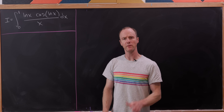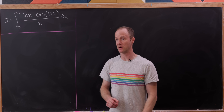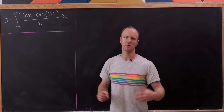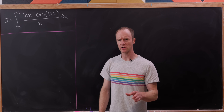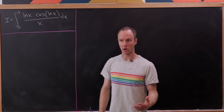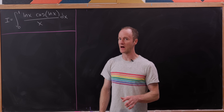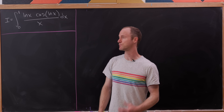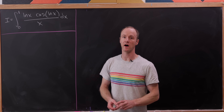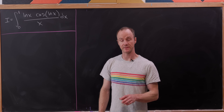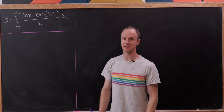Today we're going to look at an integral that was suggested by a long-term problem suggester of this channel, and I'd like to thank that person. We're going to explore — and notice that I'm not using the word 'evaluate' here — the integral from 0 to 1 of natural log of x times the cosine of the natural log of x, over x, dx.